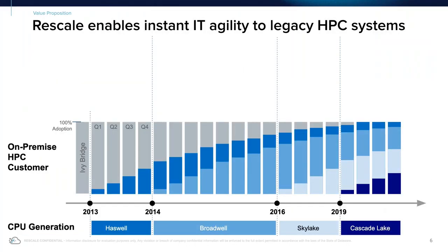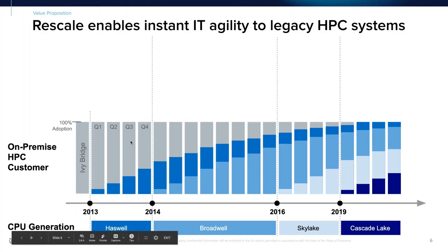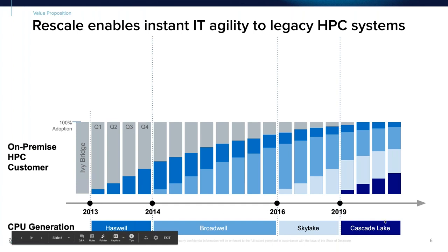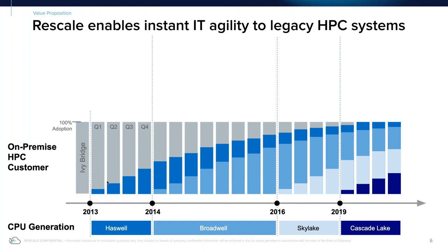Let's look at the typical on-premise hardware refresh cycle. This is a typical on-prem HPC cluster over the past seven years. We have everything from Ivy Bridge, Haswell, Broadwell, Skylake, to Cascade Lake introduced over that time period. But the refresh rate of an on-premise HPC cluster is not that fast — because they've spent a lot of money on these resources and refreshing them quickly is not financially the right option. Even in 2019 when Cascade Lake was introduced, there's a lot of usage of older architectures like Haswell and Broadwell within the on-prem cluster.